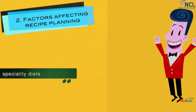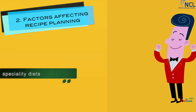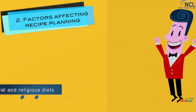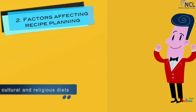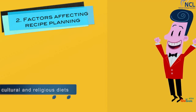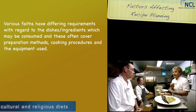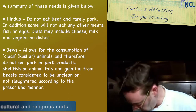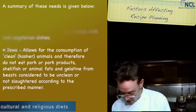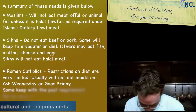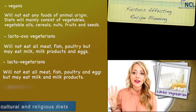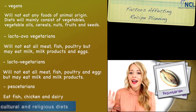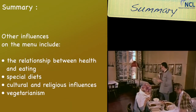Let's move on to special diets and cultural and religious diets. Some dietary restrictions prohibit pork or pork products, shellfish or animal fats, and gelatin from animals considered unclean or not slaughtered according to prescribed manner. Muslims who eat dairy products represent one type, and the third type is a pesco-vegetarian — otherwise known as a pescatarian — who eat fish and sometimes chicken and dairy products as well.